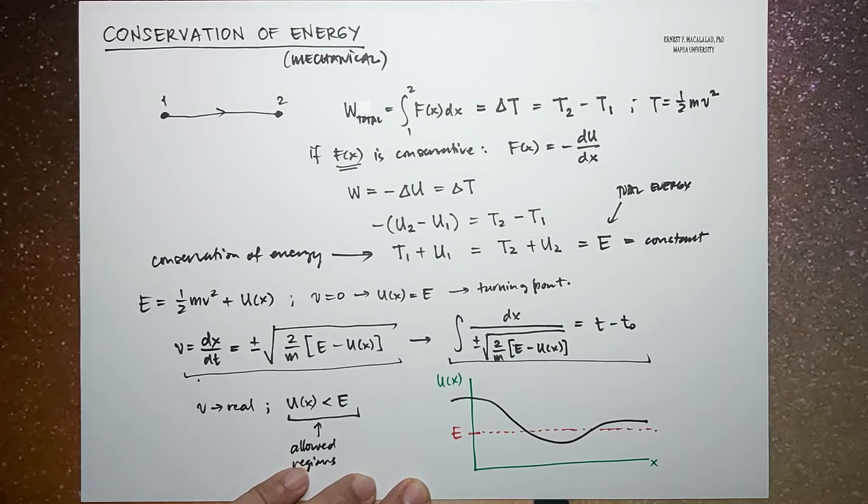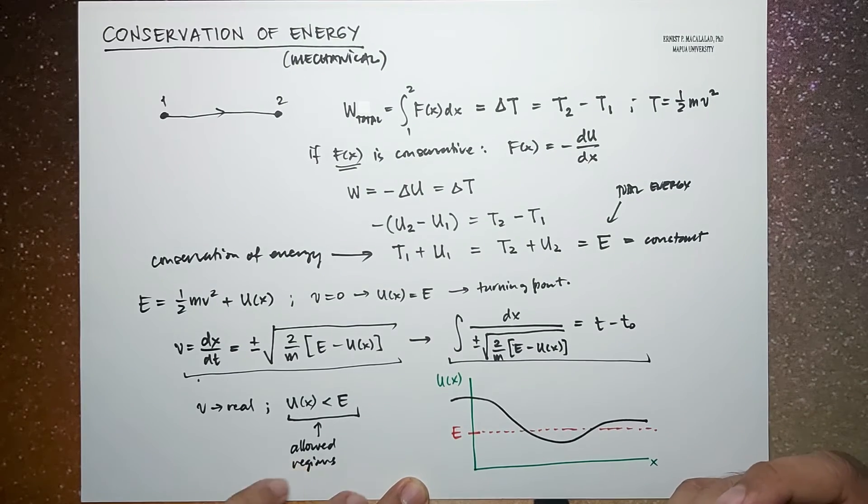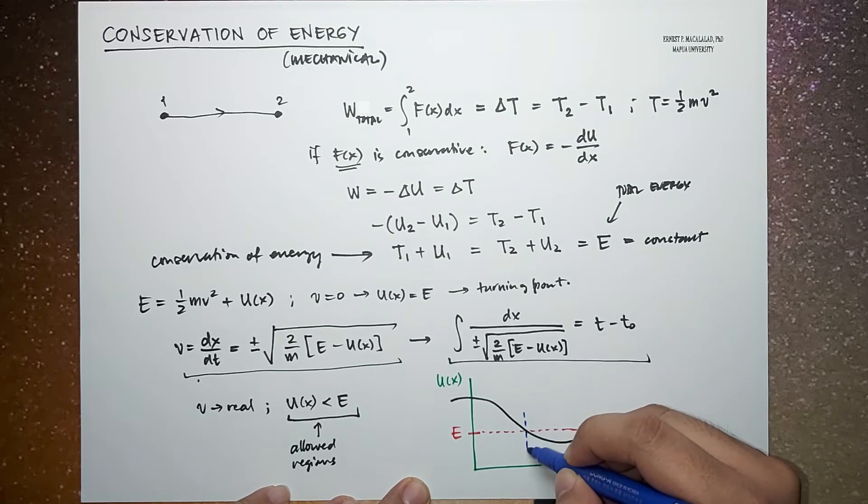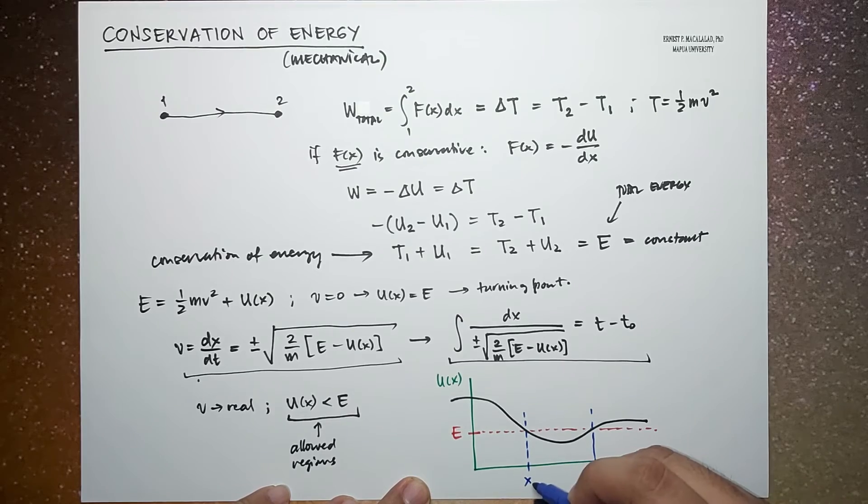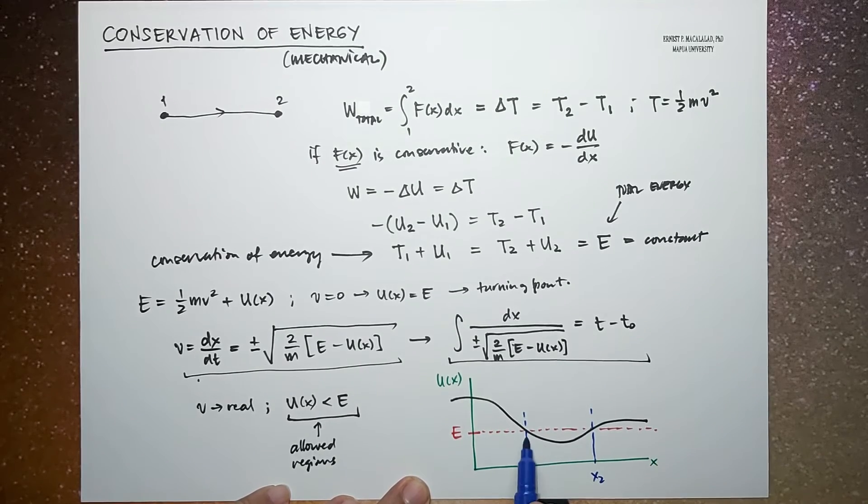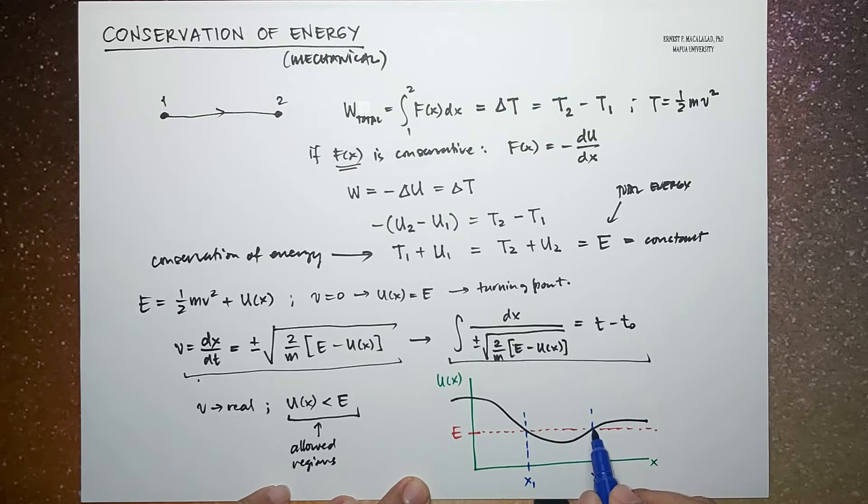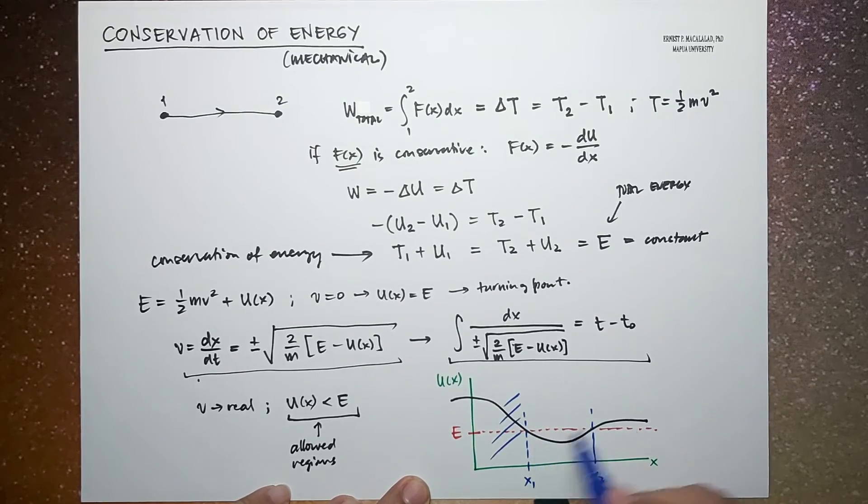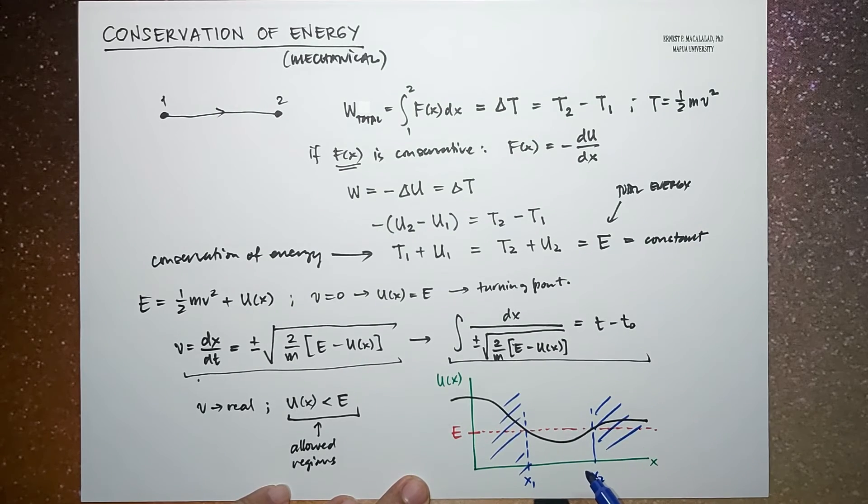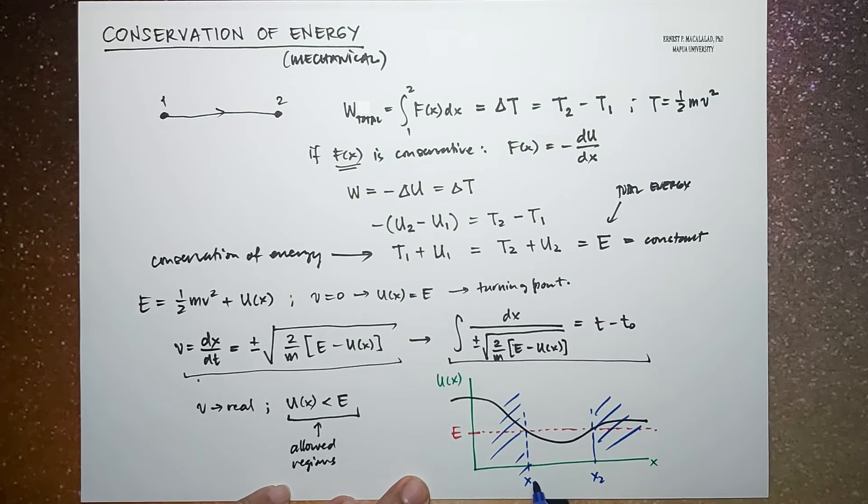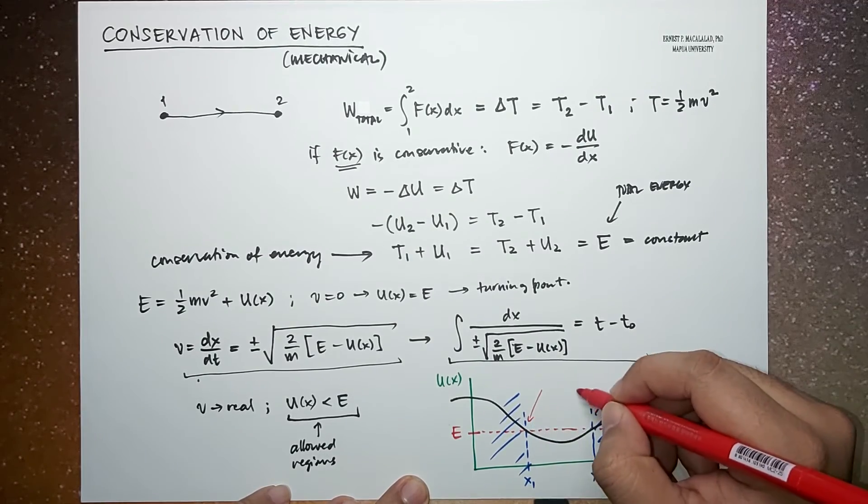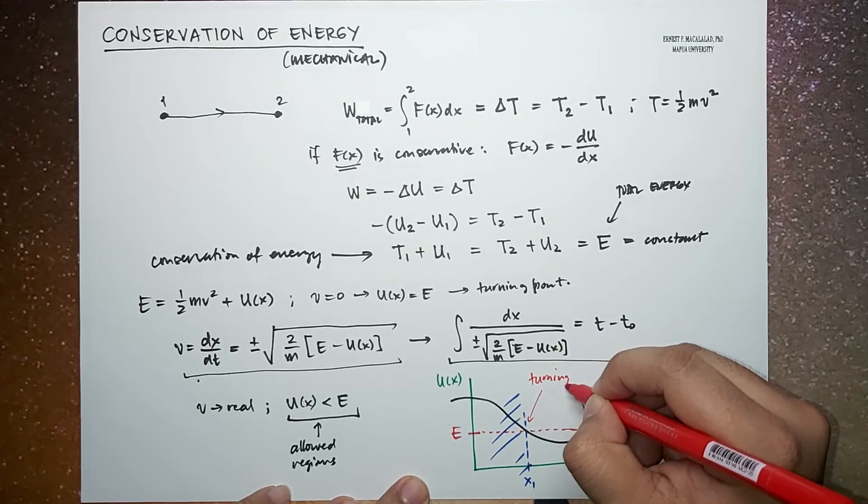So you will notice here that we can define the allowable regions wherein we define this X₁ and X₂. Because at X₁, the potential energy is equal to the total energy, and so as in X₂. So that means these parts are your forbidden regions. And the particle will only be allowed to exist within the boundary of X₁ and X₂. And these points are your turning points.